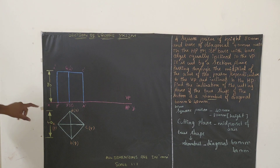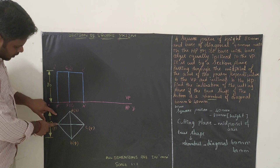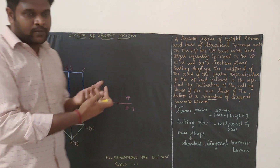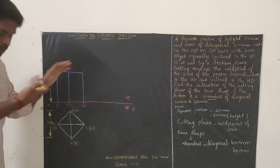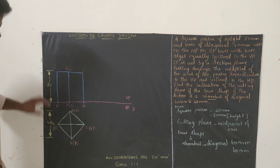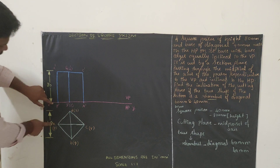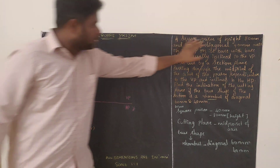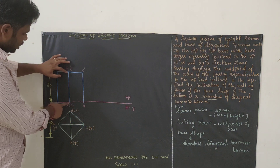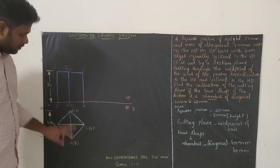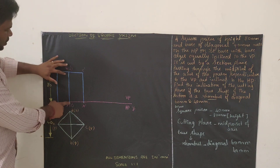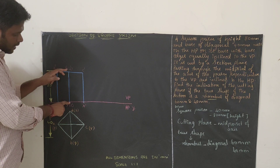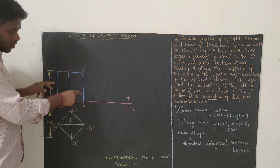The next step is to draw the front view. The square prism top surface will be ABCD and the bottom surface will be PQRS. Extend all the top view points so that you can get the front view points. The height of the axis is 80 mm. From the reference line, draw a line for 80 mm. All three lines will be 80 mm — just draw the box.